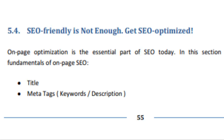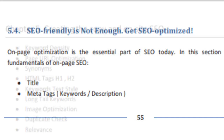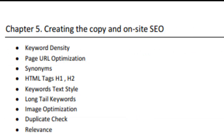There are a few main items that we will cover, including the title and meta tags, keyword density and page URL optimization, synonyms and HTML tags for header 1 and header 2 tags, keywords text style, long tail keywords, image optimization, duplicate checks, and of course relevance.